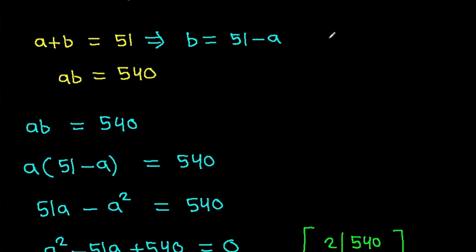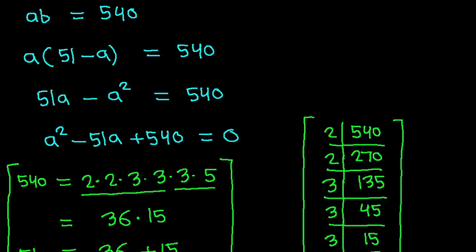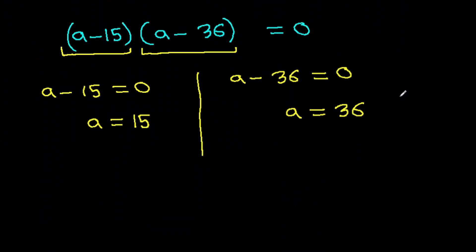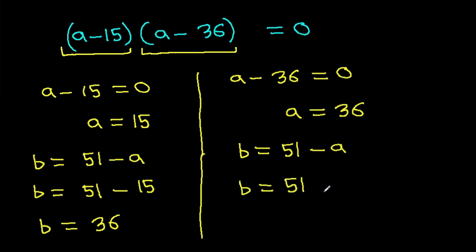And we have b is 51 minus a. So b will be 51 minus 15, and b will be 36. And here b is 51 minus a, so b will be 51 minus 36, so b will be 15.